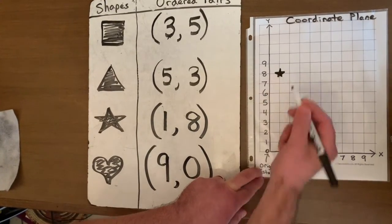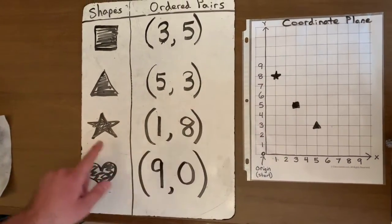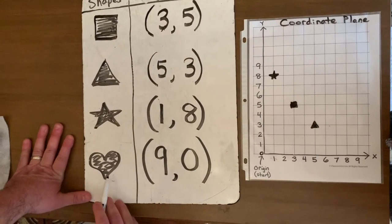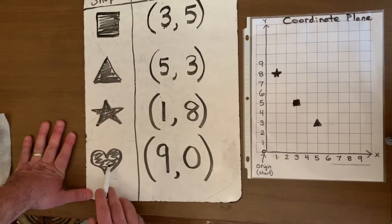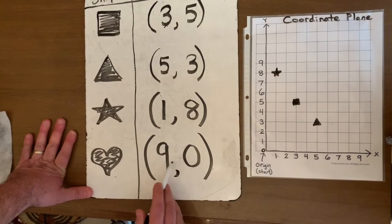I almost put a dot. Okay. So we have a star at one, eight. And our final shape to plot on our coordinate plane is a heart. So the heart I'm going to put at nine, zero.